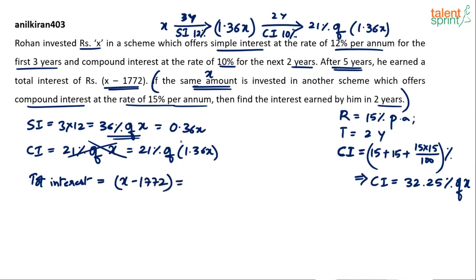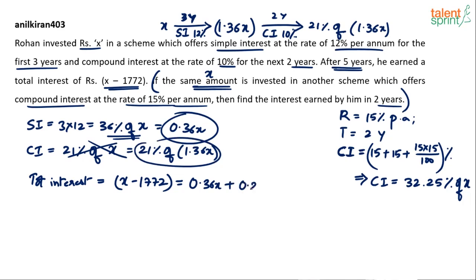The total interest equals 0.36x plus 21% of 1.36x. That is 0.36x plus 0.21 into 1.36x. So the equation is: x minus 1772 equals 0.36x plus 0.21 into 1.36x. There is only one equation with one unknown, x, so we can solve for it.